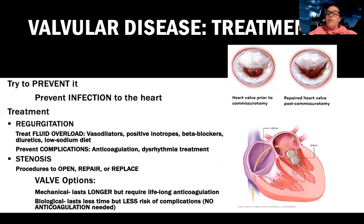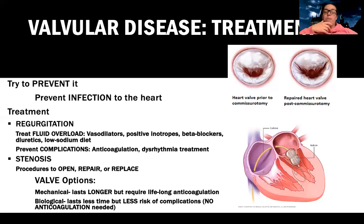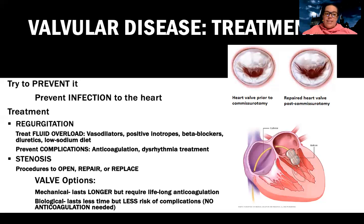Surgeries can reconstruct or replace the valve. With regurgitation we often treat symptoms and may eventually do a valve replacement. With stenosis — especially aortic stenosis — we're more likely to do procedures to open, repair, or replace sooner, because nothing may be getting through. We can balloon it open, repair it, or replace it. There are two valve replacement options regardless of whether the cause is regurgitation or stenosis.